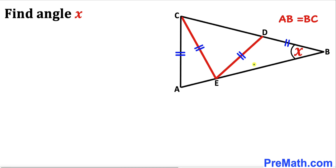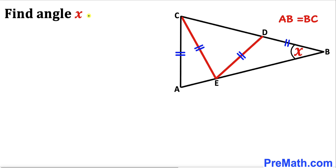Welcome to pre-math. In this video we have got triangle ABC such that line segments BD, ED, EC and AC are equal in length. Moreover, ABC is an isosceles triangle because AB equals BC, and now we are going to calculate angle X.